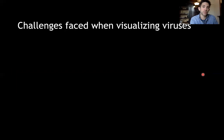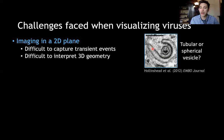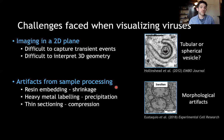So why do we use x-ray tomography? There are certain challenges faced when visualizing viruses with conventional imaging techniques like electron microscopy. One is imaging in a 2D plane, which reduces the coverage of the cell and can make it difficult to capture transient or short-lived events, such as the migration of capsids across the nuclear envelope. It can also make it difficult to interpret 3D geometry. Take this micrograph here — we have a capsid undergoing envelopment, being wrapped by what appears to be a tubular membrane. But this 2D image is actually compatible with more than one 3D model, because the membrane could be spherical but only appear tubular in a 2D section. Another issue is that many conventional techniques have heavy sample processing that can introduce morphological artifacts that make the ultrastructure less reliable.